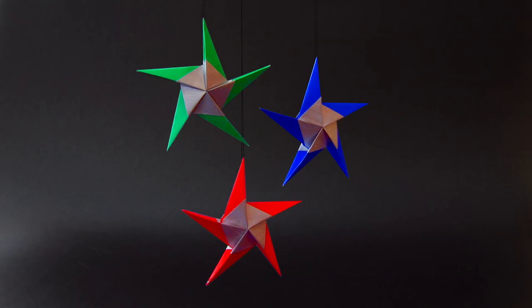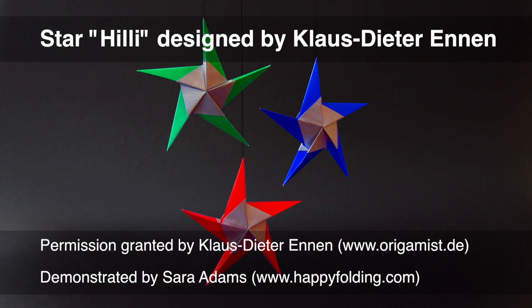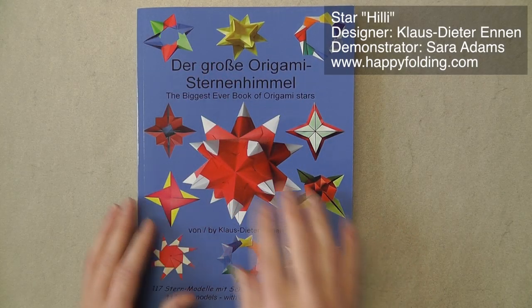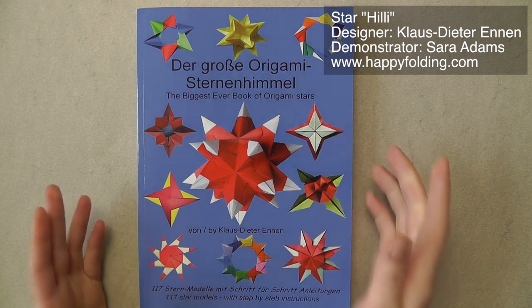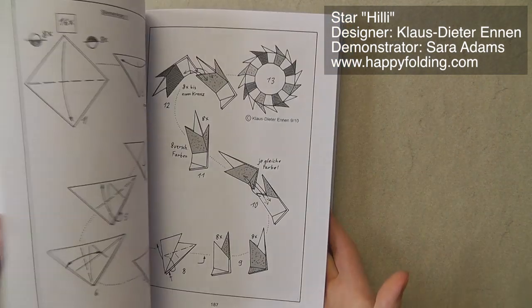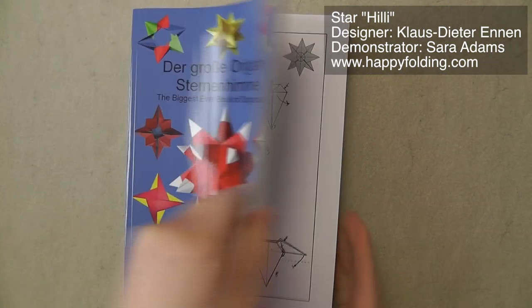In this video, I'm going to show you how to fold a modular star called Hilly, designed by Klaus-Dieter Ennen. Diagrams can be found on Klaus-Dieter's website, www.origamist.de, and he also published a book called The Biggest Ever Book of Origami Stars, which features 117 star models, both from single sheets and modulars.